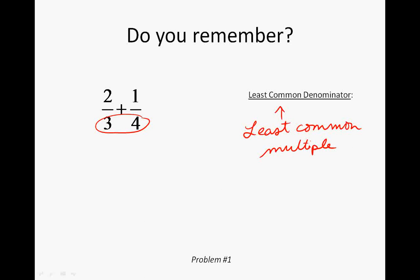You can use any common multiple, but the least common multiple avoids further simplification. Looking at three and four: multiples of three are 3, 6, 9, 12, 15, 18... and multiples of four are 4, 8, 12, 16... The least common multiple is 12, so our least common denominator is going to be 12.